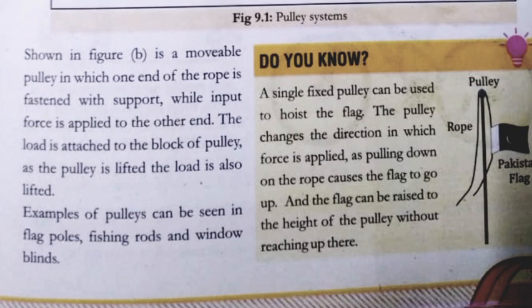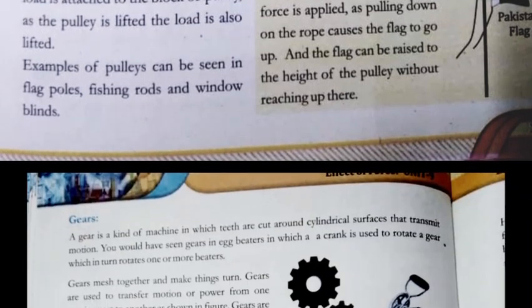Here we have an example that is the fixed pulley as we have seen in wells. We have flag of pole here. A single fixed pulley can be used in the hoisting flag. When you see a statue in a special moment, then on one side a person pulls away and the flag moves away. That is one side of the pole is fixed pulley through and from the side of the rope, we pull the rope from the side and the flag flies on the side. Is that clear? In which the force is applied as pulling down on the rope causing the flag to go up. And the flag can be raised to the height of the pulley without reaching up there.